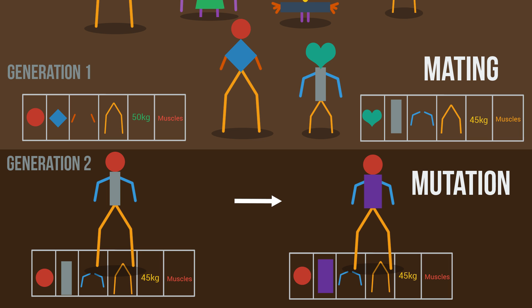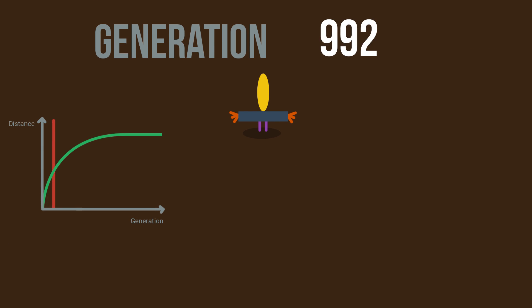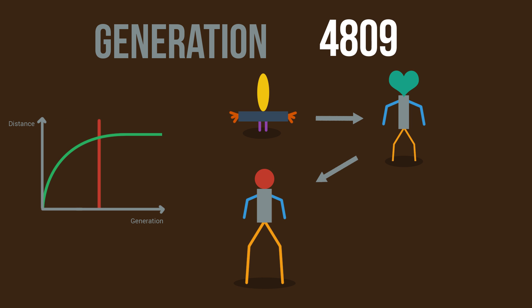Using this process with several creatures, the next generation is created. The whole process is repeated multiple times. After each generation, the average distance traveled increases, because good characteristics are becoming more common.